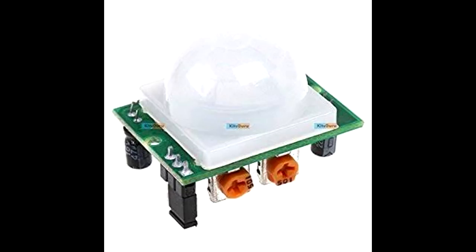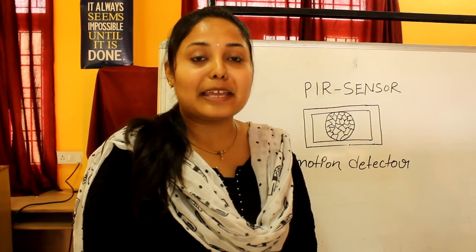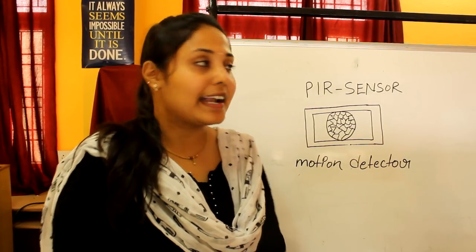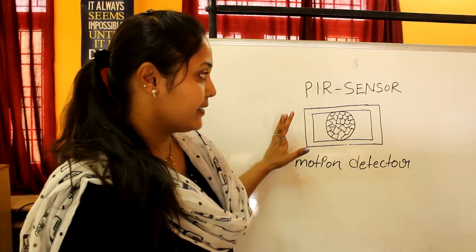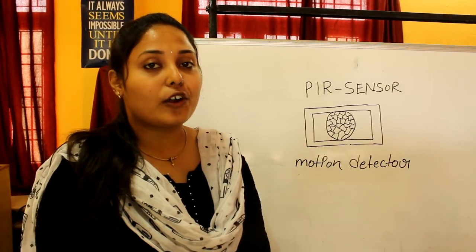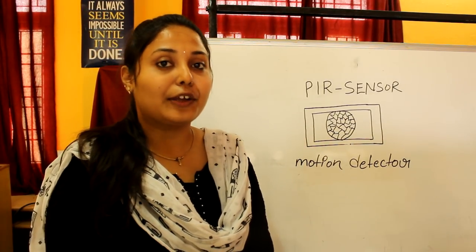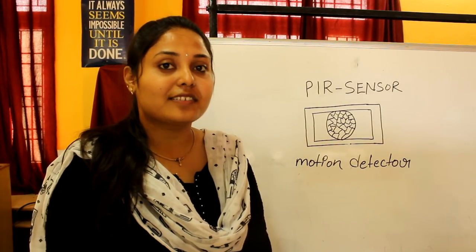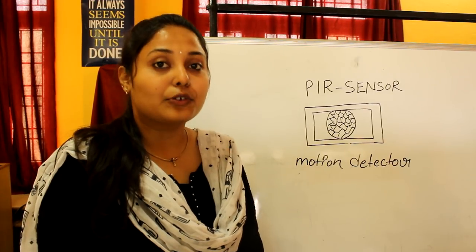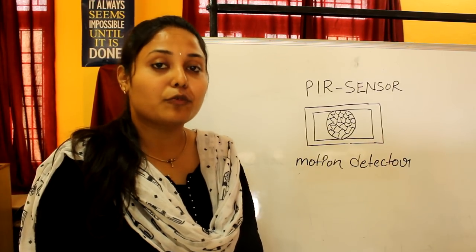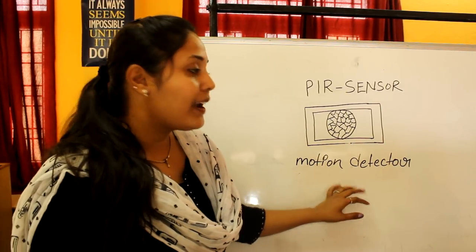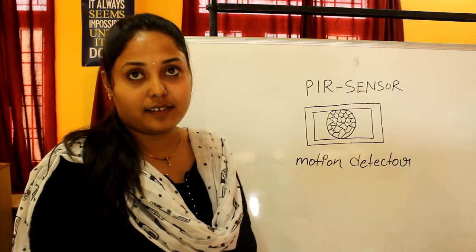My name is Bijay Sri. I want to explain the working functionality of the PIR sensor. PIR sensor is also called a passive infrared radiation sensor. This sensor is used to detect the motion of moving particles, and it is also called a motion detector.